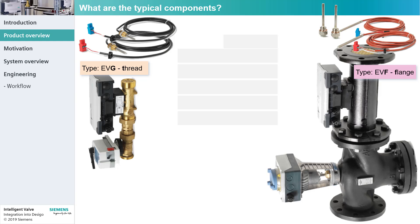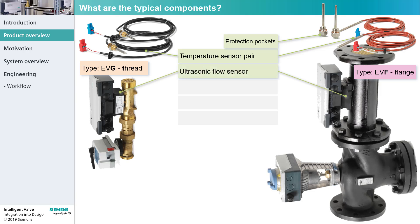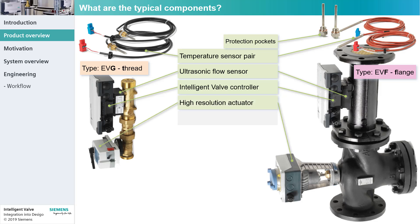Let's have a look at the common components. The temperature sensor pair is used to measure the temperature in the primary flow and return. The ultrasonic flow sensor feeds the Intelligent Valve controller with the present volume flow. The Intelligent Valve controller provides dynamic flow control and energy monitoring. To do so, it integrates the temperature difference and present flow signals to calculate the present power output and provide precise volume flow control by steering the high-resolution actuator to precisely set the control valve position.